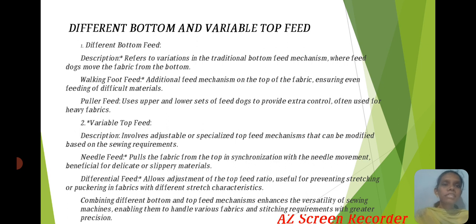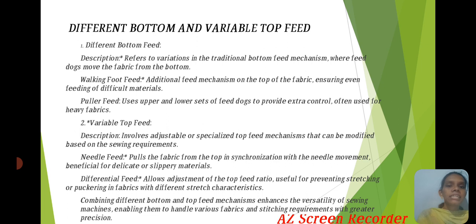Differential Feed refers to variations in the traditional bottom feed mechanism, where the feed dog moves fabric from the bottom while a walking foot feeds from the top, ensuring even feeding of different materials. Fuller Feed uses upper and lower sets of feed dogs for extra control, used in heavy fabrics. Various top feed mechanisms include needle feed, which pulls fabric from the top in synchronization with needle movement, beneficial for delicate and layered materials. Differential feed allows adjusting the top feed ratio, used in preventing stretching or puckering of fabric.